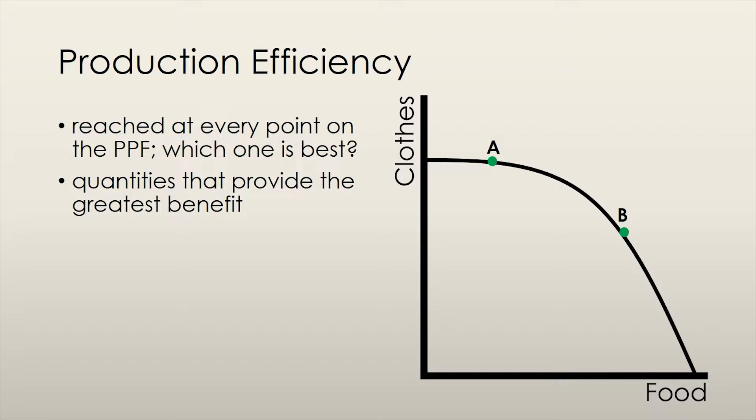This is what we will determine using the concept of allocative efficiency. The best point on the production possibilities frontier is the point at which goods are produced in quantities that provide the greatest possible benefit. I'll expand a bit more on the concept of benefit in just a bit.